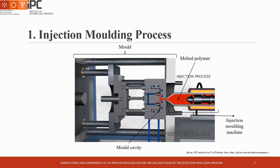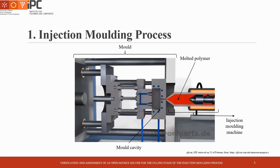Injection molding process consists of making a polymer melt fill a mold cavity under pressure. More precisely, first the polymer pellets are melted to a molten state inside an injection machine. After that, due to the advance of a screw, the polymer melt is forced to fill a mold cavity that presents a geometry close to the final part to be obtained, in a stage called filling. After cooling and solidification, the plastic product is ejected.